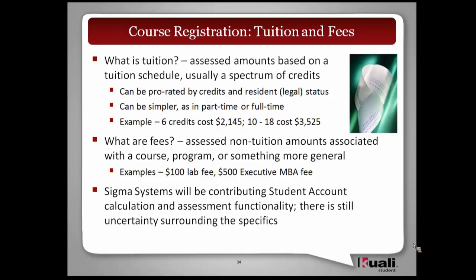Tuition we'll pretty much understand — basically those are amounts assessed based on a schedule, and it can be prorated by credits or by resident status in the U.S. — or legal status on your end. It could be as simple as part-time or full-time. For six credits you might pay a flat amount, $21.45, but any credits in the range of $10 to $18 would cost the same amount, $35 or $25 in this particular example.